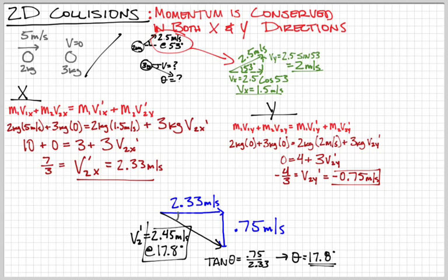So the velocity of the 3-kilogram object afterwards is 2.45 meters per second at 17.8 degrees below the horizontal, which matches our picture. Breaking momentum up into X and Y is exactly what we're going to do during lab tomorrow — be ready for that.